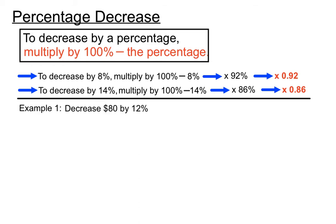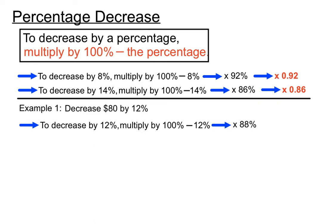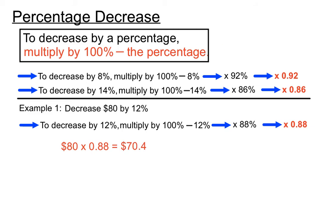Let's have an actual example: decrease $80 by 12%. We multiply it by 100% minus 12%, which is 88%. The decimal version of 88% is 0.88. So if we multiply $80 by 0.88, we've decreased $80 by 12%, giving an answer of $70.40.